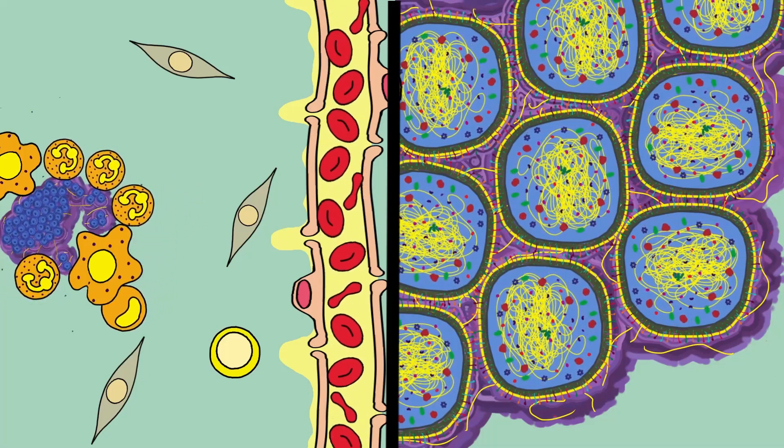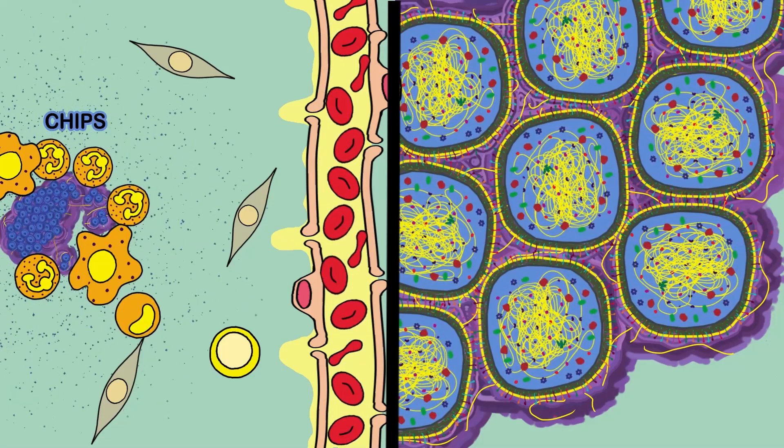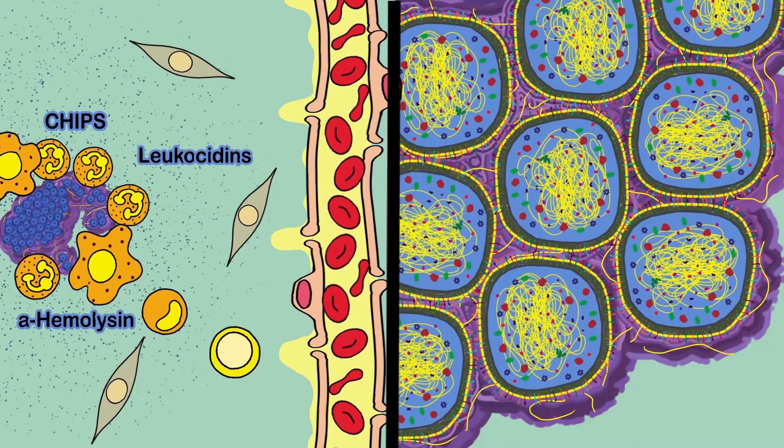Minutes later the colony starts releasing several virulence factors like chemotaxis-inhibiting proteins, alpha-toxin, and leukocidins.